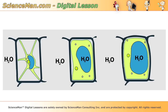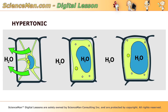If a plant cell is placed in a solution with a higher concentration of particles than inside the cell — otherwise known as a hypertonic solution — water will move by osmosis to the area of higher concentration outside the cell. You can see here the blue water vacuole in this cell is shrunken and the cell membrane has shrunken away from the cell walls.